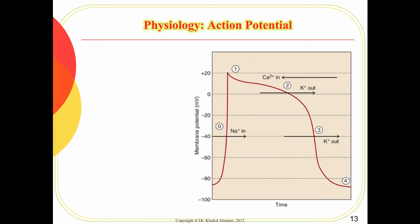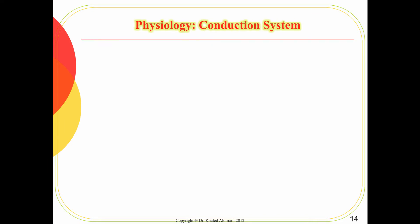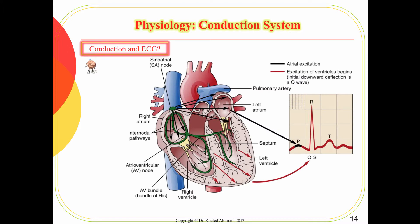We'll talk about action potential more next week, but keep in mind that this is from physiology and these are the electrolytes involved. Any change in these electrolytes will affect the rhythm of the ECG. The conduction system consists mainly of the SA node, which is in the right atrium, the AV node between the atria and ventricle, the Bundle of His, and the Purkinje fibers.